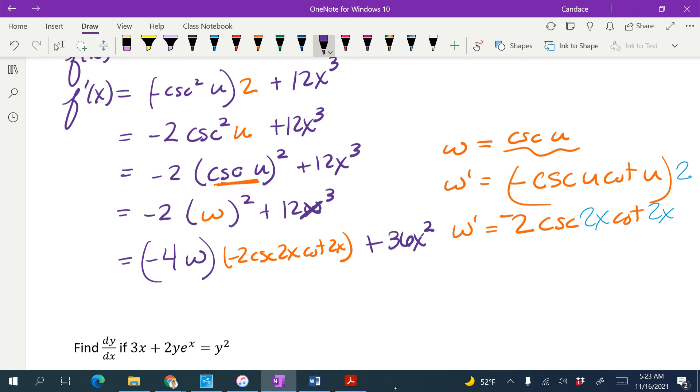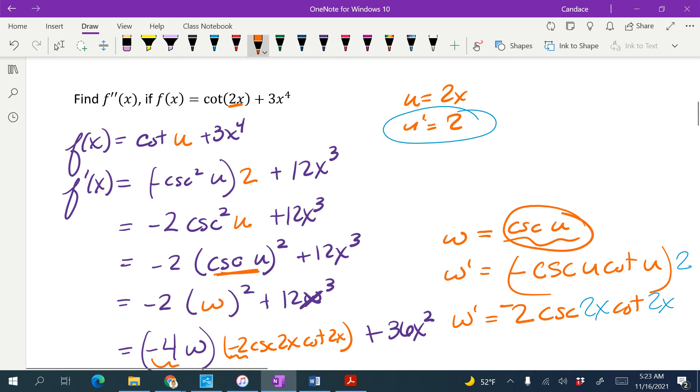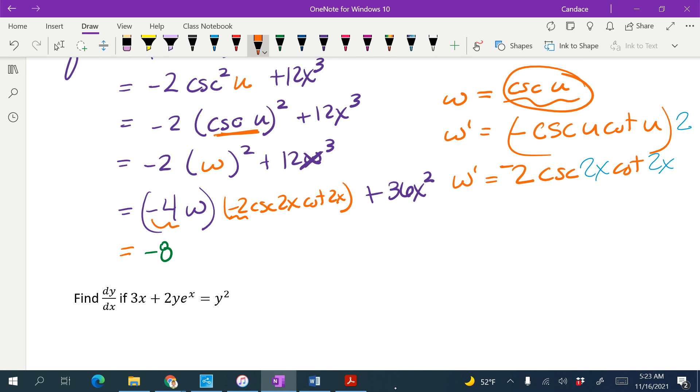So I do need to replace that w. So let's see, I'm going to do a little bit of multiplication. So negative 4 times negative 2 would be negative 8. That w is going to get replaced with cosecant of u, but remember our u was 2x, so we're going to do cosecant of 2x.